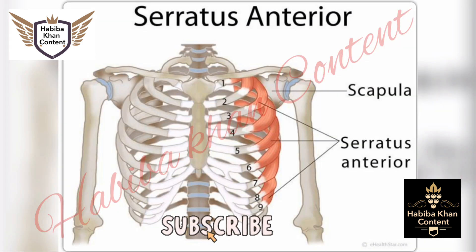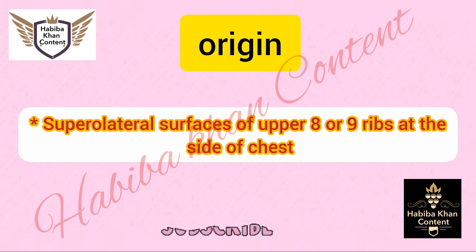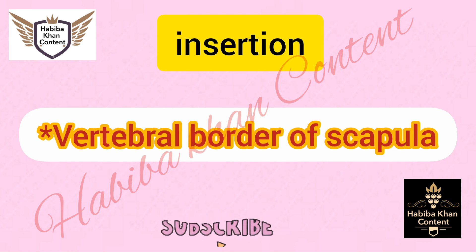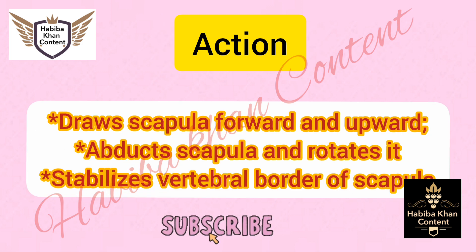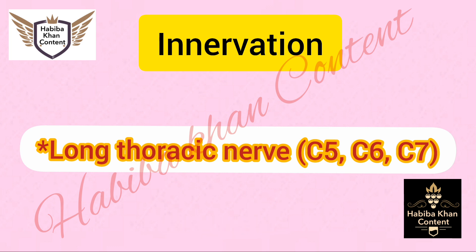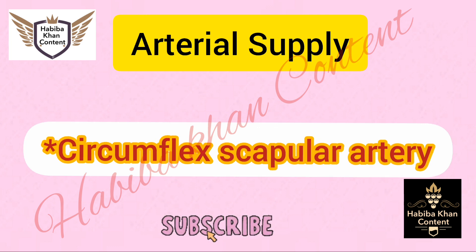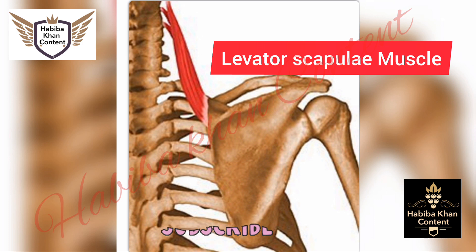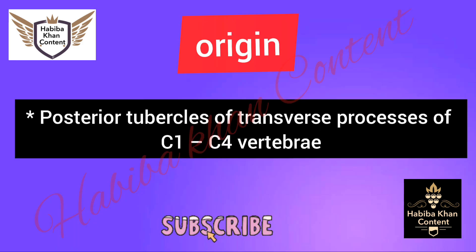Serratus anterior muscle. Origin: supralateral surfaces of upper 8 or 9 ribs at the side of the chest. Insertion: vertebral border of scapula. Action: draws scapula forward and upward, abducts scapula and rotates it, stabilizes vertebral border of scapula. Innervation: long thoracic nerve C5, C6, C7. Arterial supply: circumflex scapular artery.